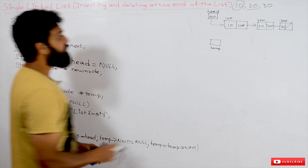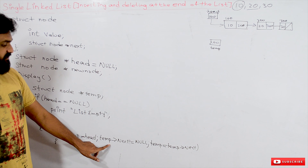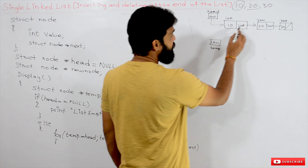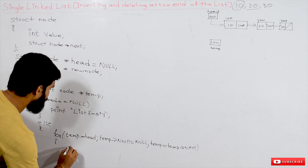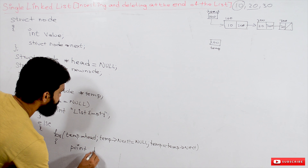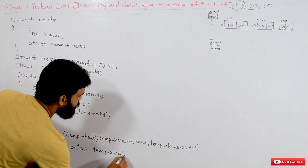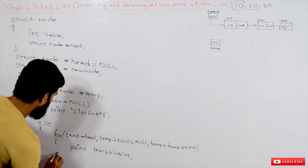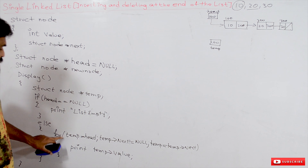The display function has two conditions. If head == null, the list is empty, so we print 'list empty'. Otherwise, we print all elements using a for loop.